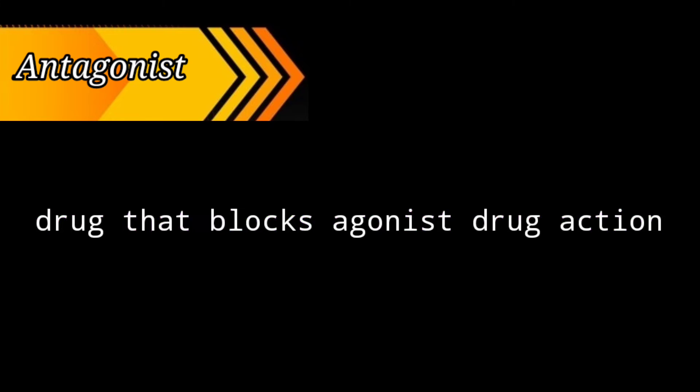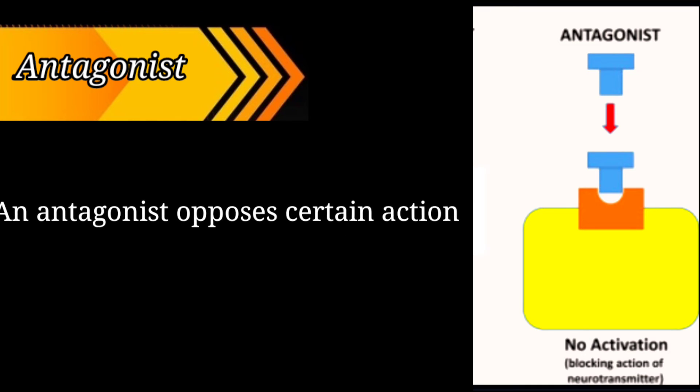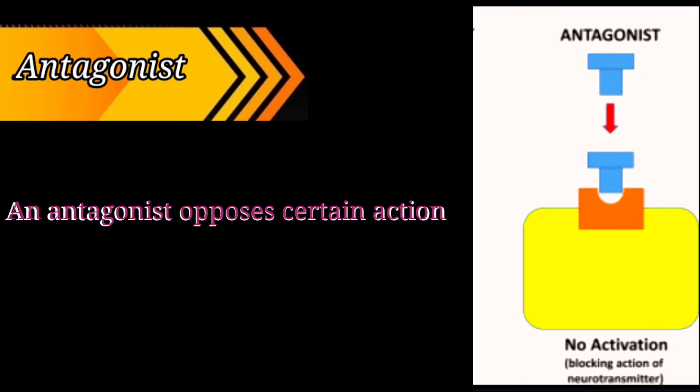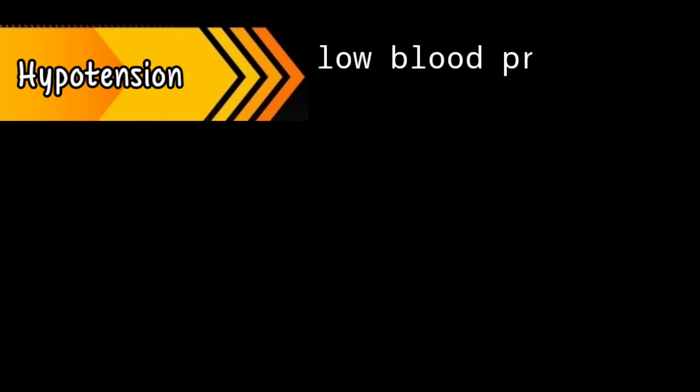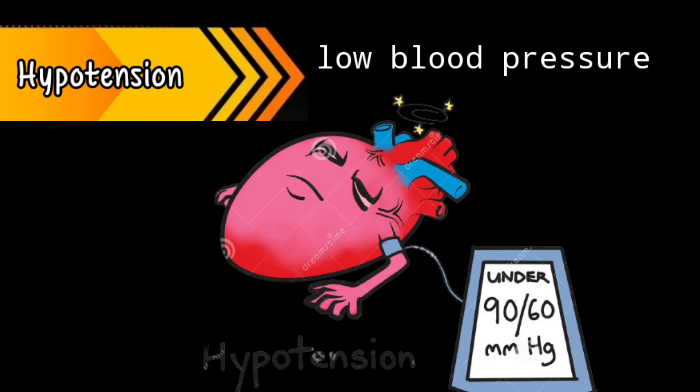Antagonist: a drug that blocks the agonist's drug action and no activation takes place — an antagonist opposes certain actions. Hypotension means low blood pressure. Our normal blood pressure is 120/80 mmHg. Hypertension means high blood pressure.